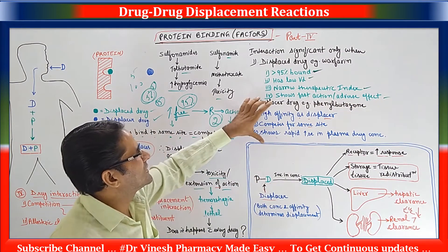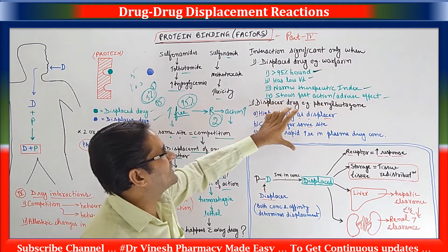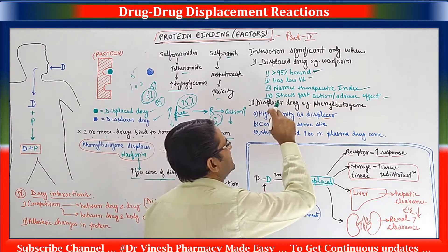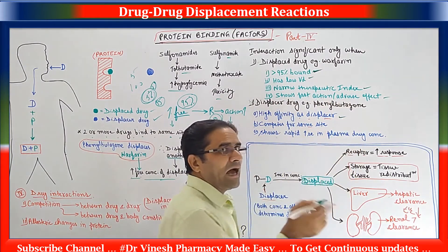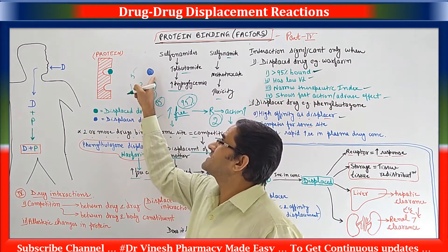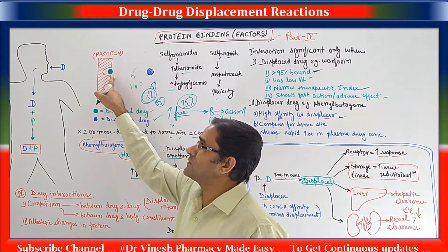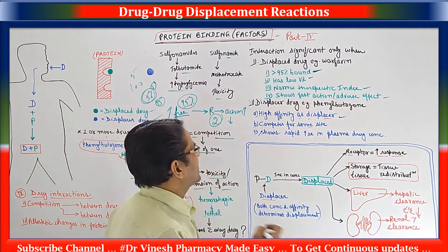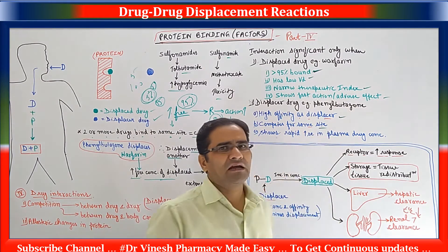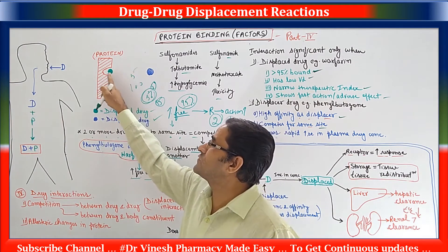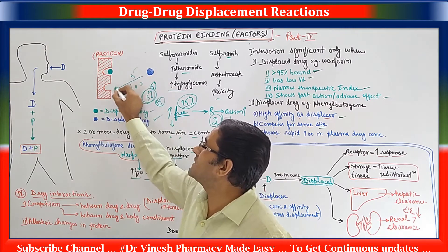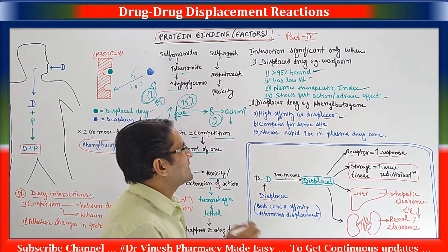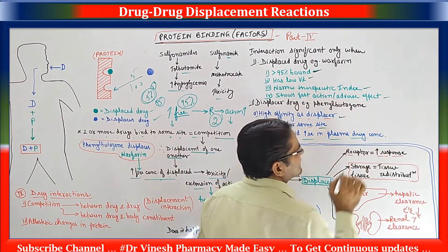Now for the characteristics required by the displacer drug for the interaction to be clinically significant: first, the displacer drug should have high affinity — because only if it has higher affinity than the displaced drug can it displace it from the binding site. Second, it must compete for the same binding site — if it binds at a different site there will be no competition. Third, it should cause a rapid increase in plasma drug concentration, meaning the increase in plasma concentration should be fast.